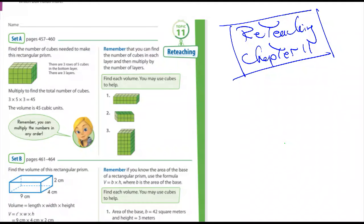Okay, it says it's recording. This will be pretty short, you guys have done these before. This is reteaching Chapter 11. Set A says find the number of cubes needed to make the rectangular prism.